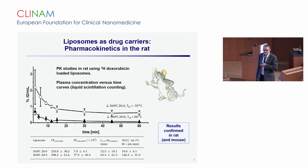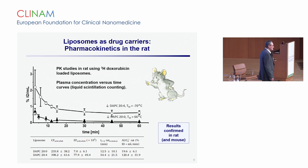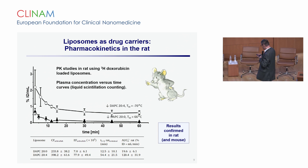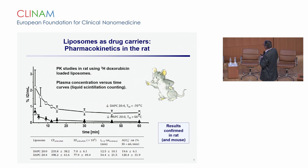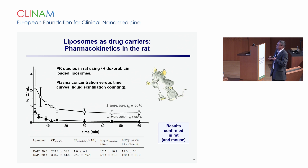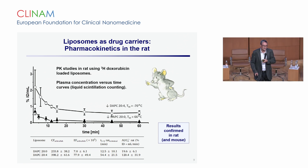Can we extrapolate from the zebrafish to higher vertebrates? Yes, this is possible. We performed pharmacokinetic experiments in the rat with both DAPC-based liposomal formulations — the low phase transition temperature flexible membrane formulation and the DAPC with the high phase transition temperature rigid particles. The flexible particles show a long half-life in circulation, a high AUC, and small clearance. The rigid particles show a short half-life and high clearance — fully confirming in the rat the results we observed in the zebrafish.